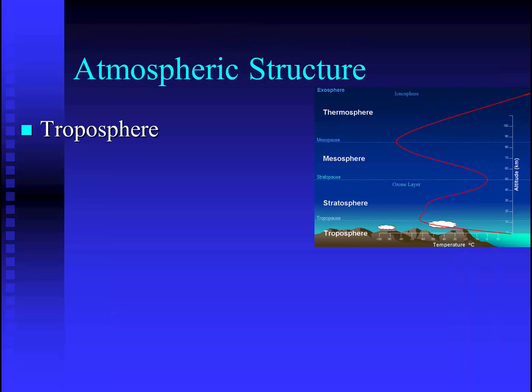Starting off with the troposphere. The word troposphere means changeable. This is the location of the atmosphere where virtually all weather occurs. There are occasional clouds and winds that extend beyond the troposphere, but most of the weather that affects us — clouds, rain, snow — occurs in the troposphere.